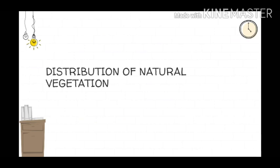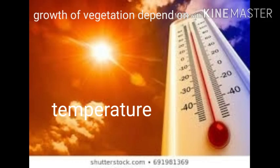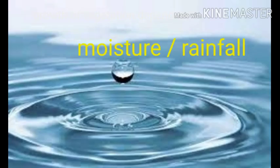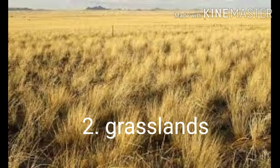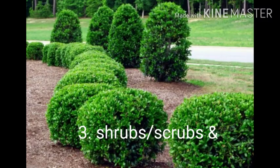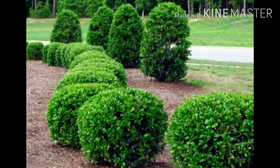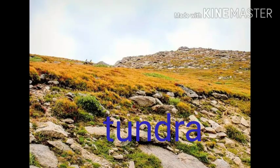Distribution of Natural Vegetation: The growth of vegetation depends primarily on temperature and moisture. The major vegetation types of the world are grouped as forests, grasslands, shrubs, and tundra regions.